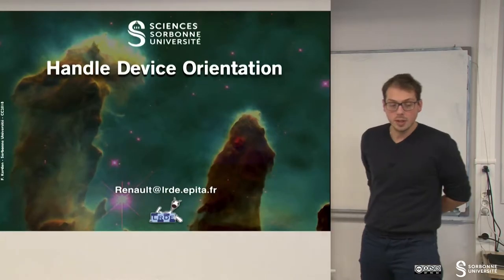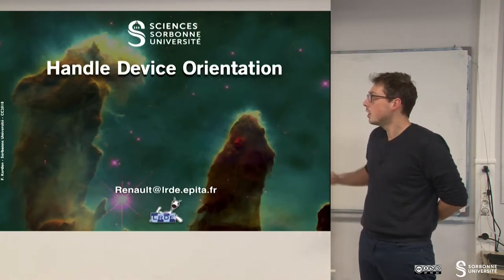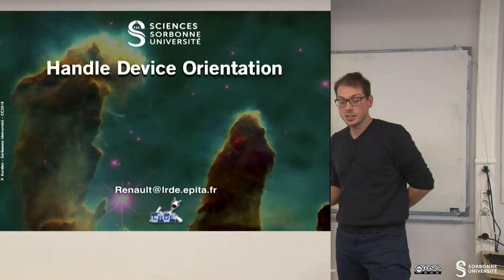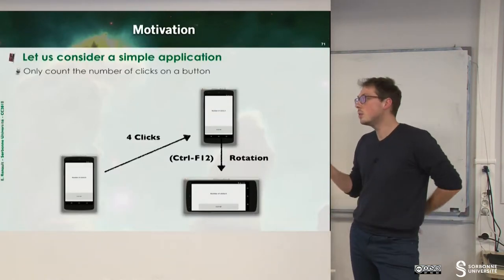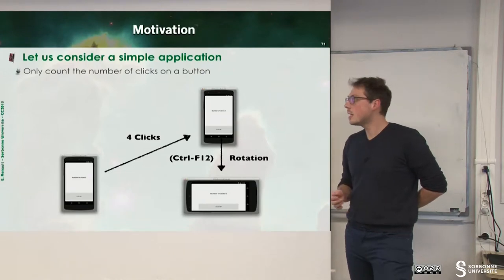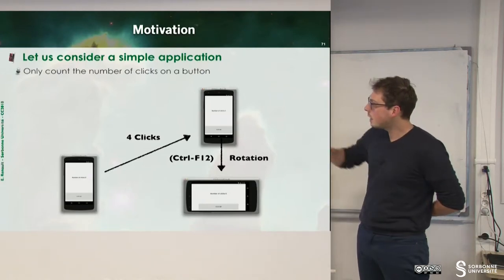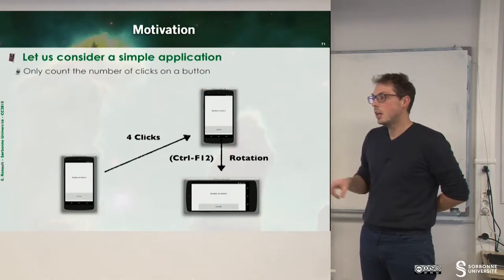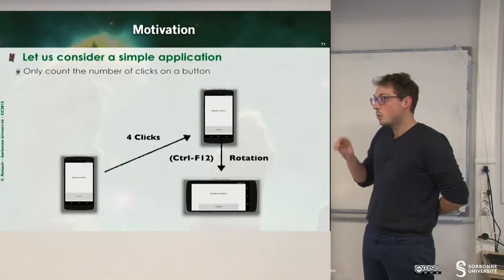In this chapter, we will try to understand how to handle device orientation. Before diving into orientation, let's have a small example. I have a simple GUI here with a button and a text view, and this text view will display the number of clicks on the button.